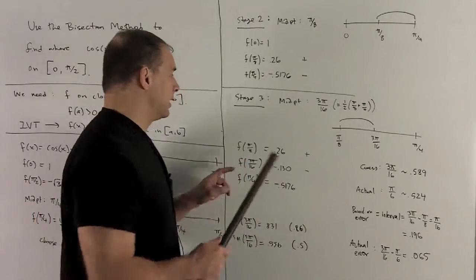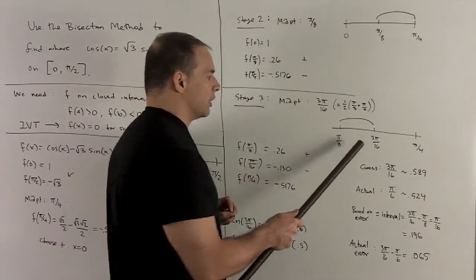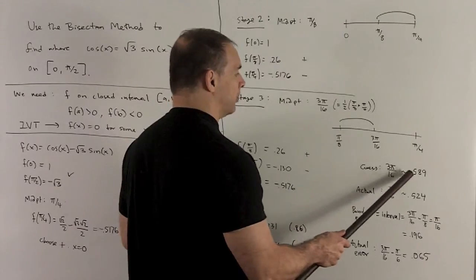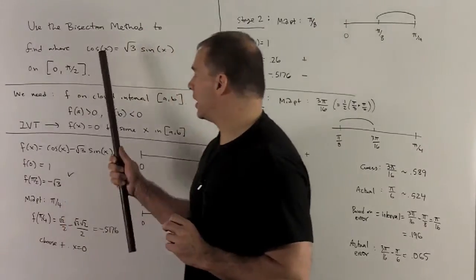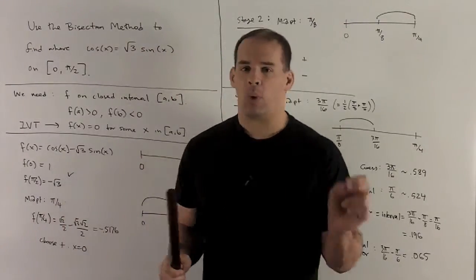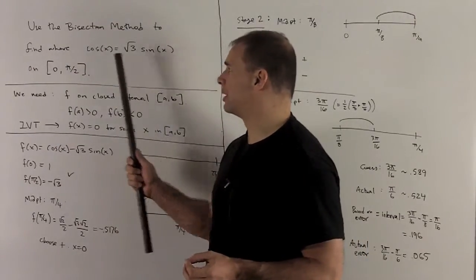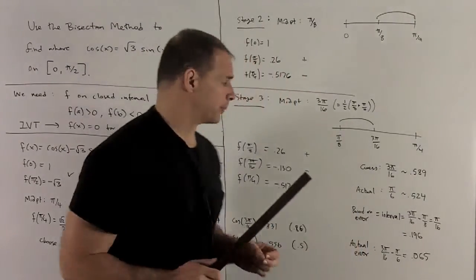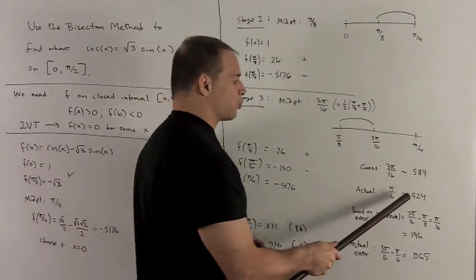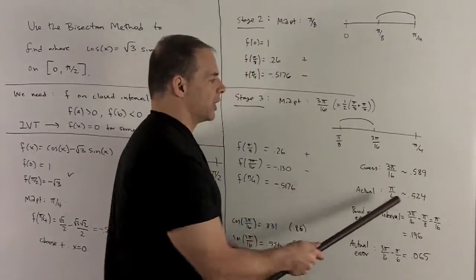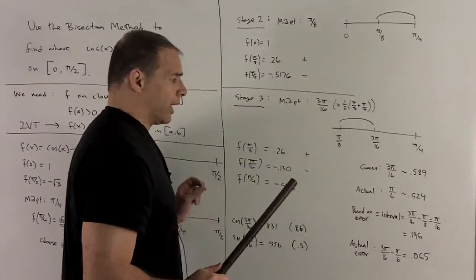So if I stop at stage three, our guess for the zero is going to be the midpoint. So it's going to be 3π/16. That's roughly 0.589. What's the actual answer? If you took a look at this, you notice 1/2 and √3/2 go together. So this is going to be either π/6 or π/3 to get the solution to this. The actual is going to be π/6. π/6 is roughly 0.524. So you see we're in the ballpark of this. We're not exact, but we're close.